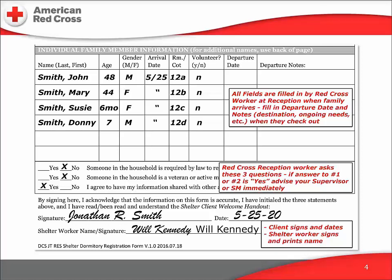We only share the information when we are seeking special assistance for the client. Please note that a yes is not required to register — a no is acceptable and will be respected. The client's signature and the date, the registration staffer's signature and printed name complete the form. This form and the information it contains is never shared with anyone who is not a Red Cross person who needs the information and is authorized to see it. Since the form contains personal and confidential information, it is kept in a secure location, usually in the registration folder or book in the Red Cross shelter office.